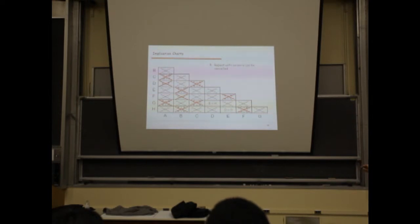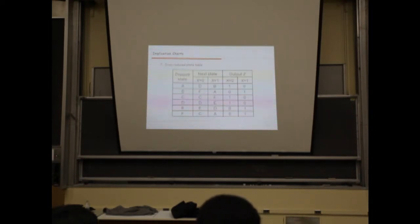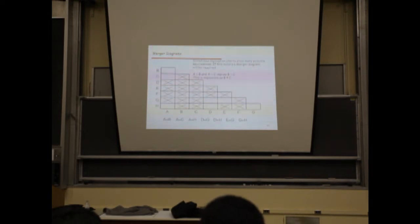You just have to go through the table again and again until you fix all of them. Going through the table again leads us to determine that the possible combinations remaining are simply: H can be combined with E, and G can be combined with D. So the system has been reduced to this number of states.